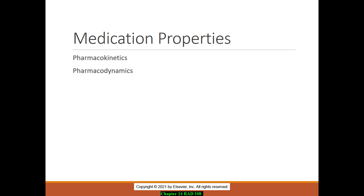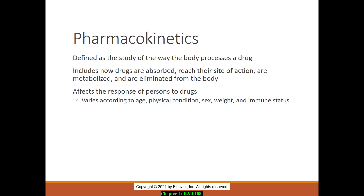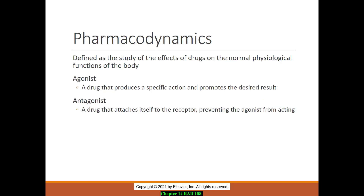Some medication properties we need to be aware of: pharmacokinetics is the study of how the body processes a drug — including how drugs are absorbed, how they reach their site of action, how they're metabolized, and how they're eliminated from the body. This can vary based on the patient's age, sex, weight, and immune status. We also need to be aware of pharmacodynamics, which is the study of the effects of drugs on normal physiological functions of the body — whether a drug promotes a desired result or a receptor prevents something from acting upon it.